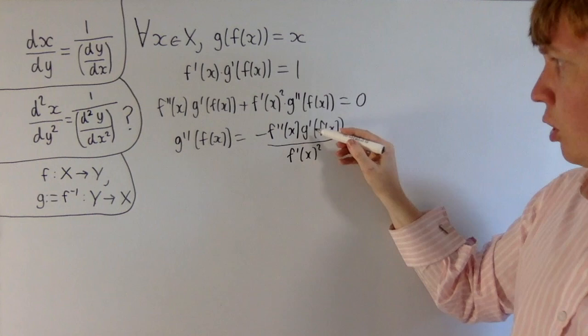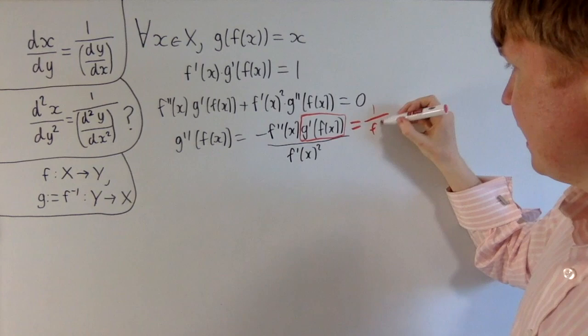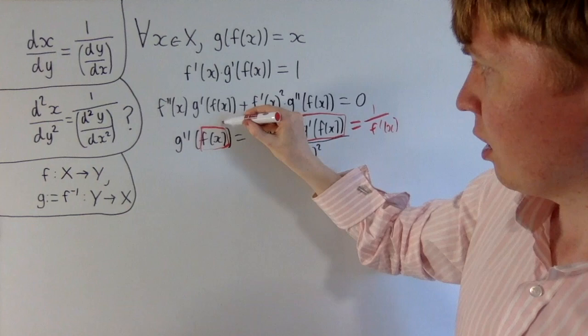Here we've got g'(f(x)). We can actually simplify this a little bit, because we can just use the previous rule. We know that g'(f(x)) is just equal to 1/f'(x). What we can do as well is take our f(x) here and write this as equal to y, our generic point y, once again.